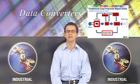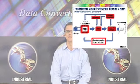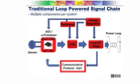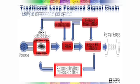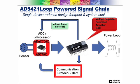The diagram here shows a traditional loop-powered architecture, consisting of a sensor and accompanying signal conditioning circuitry. The transmitter circuitry consists of discrete DAC, reference, voltage regulator and loop interface stage. The AD5421 replaces all these components, providing designers with a single-chip solution.